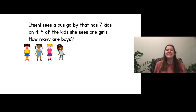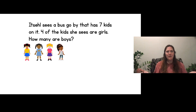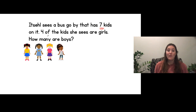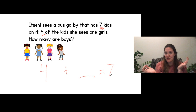This one's about Itzel. It says Itzel sees a bus go by that has seven kids on it. Four of the kids she sees are girls. How many are boys? So Itzel sees the bus that has seven kids on it — seven altogether. Four of the kids are girls. How many are boys? So these are the four girls, plus how many boys equals seven. You figure it out — how many of them are boys? If four are girls, how many are boys to equal seven kids altogether?